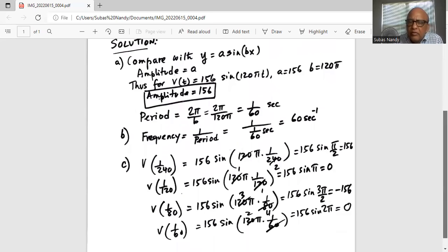Then we find the value of the voltage at 1 over 120. So for t I substitute 1 over 120 and I get 120 pi multiplied by 120. The 120 cancels in the numerator and denominator leaving 156 sine pi. We know sine pi is 0. So voltage at 1 over 120 is 0.